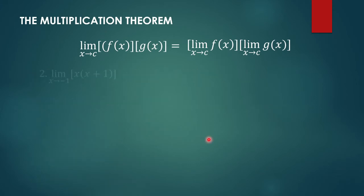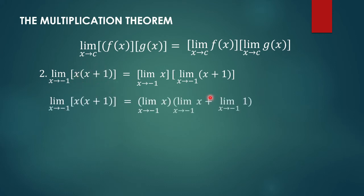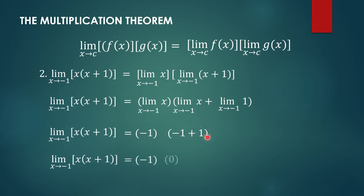Another example: the limit of x times (x plus 1) as x approaches negative 1. We can write this as the limit of x as x approaches negative 1 times the limit of (x plus 1) as x approaches negative 1. The first factor evaluates to negative 1. The second factor: the limit of x as x approaches negative 1 is negative 1, plus the limit of 1 is 1, giving negative 1 plus 1 equals 0. So negative 1 times 0 gives us 0.